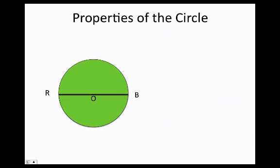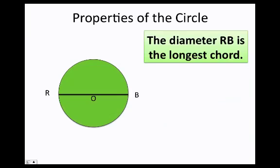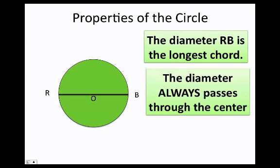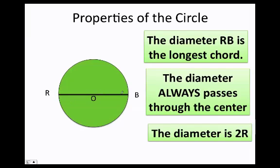Let's talk about the properties of the circle. The diameter RB is always the longest chord in the circle. Moreover, the diameter RB will always pass through the center of the circle. What happens here? If I know that RB is equal to 10, then I can figure out that any other chord that goes through the center is also going to be equal to 10. So this guy will be equal to 10, this guy will be equal to 10, 10, and finally 10.